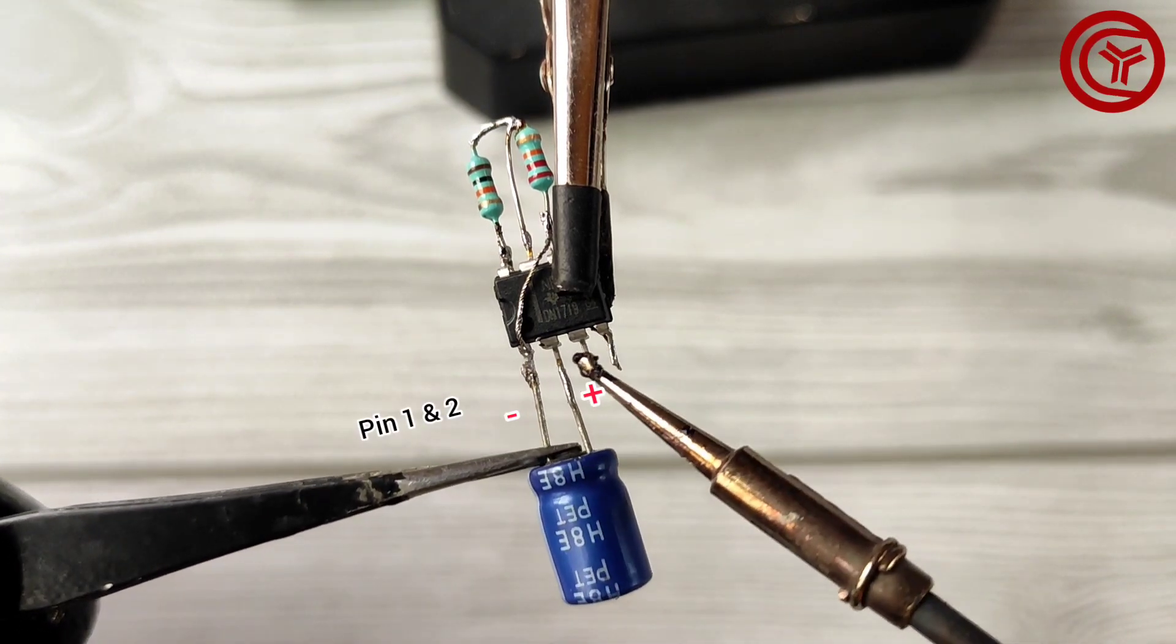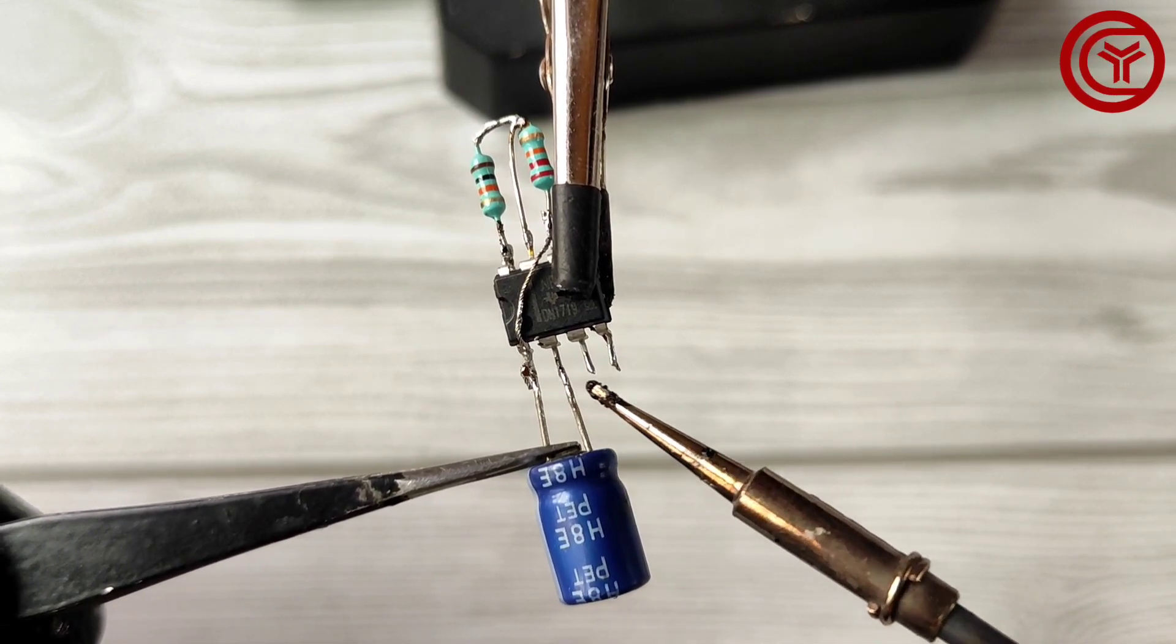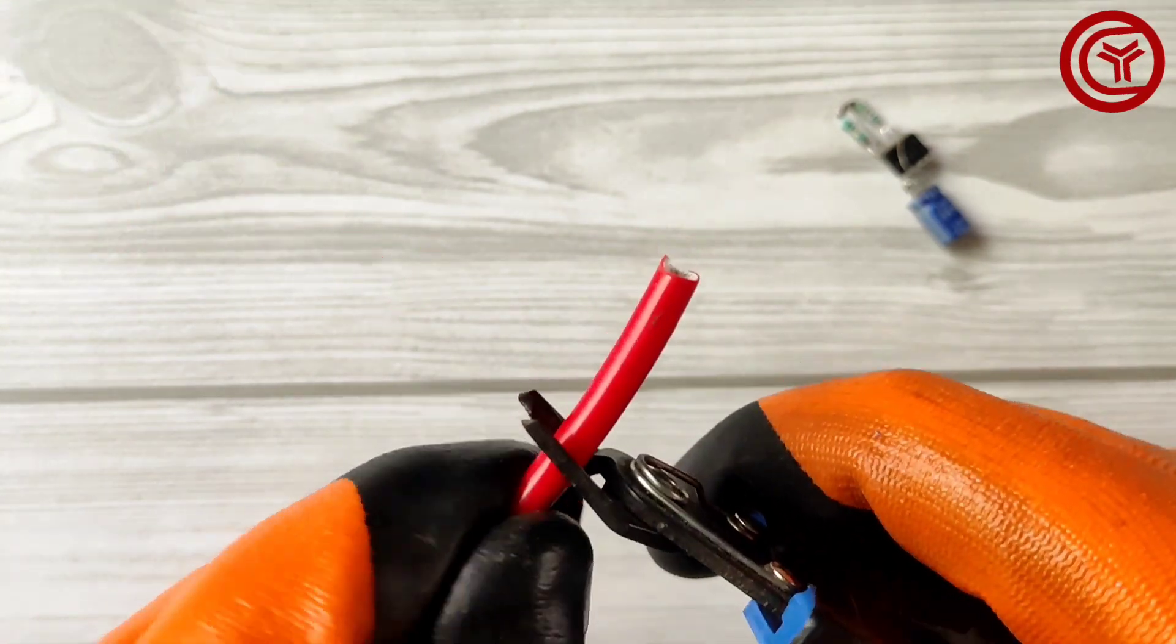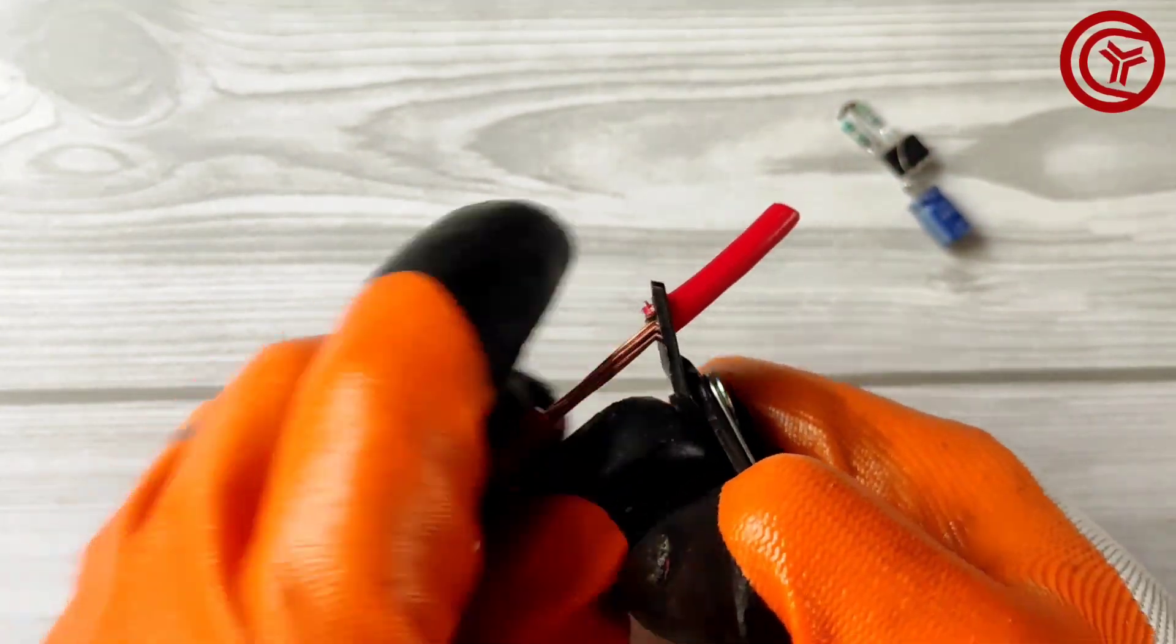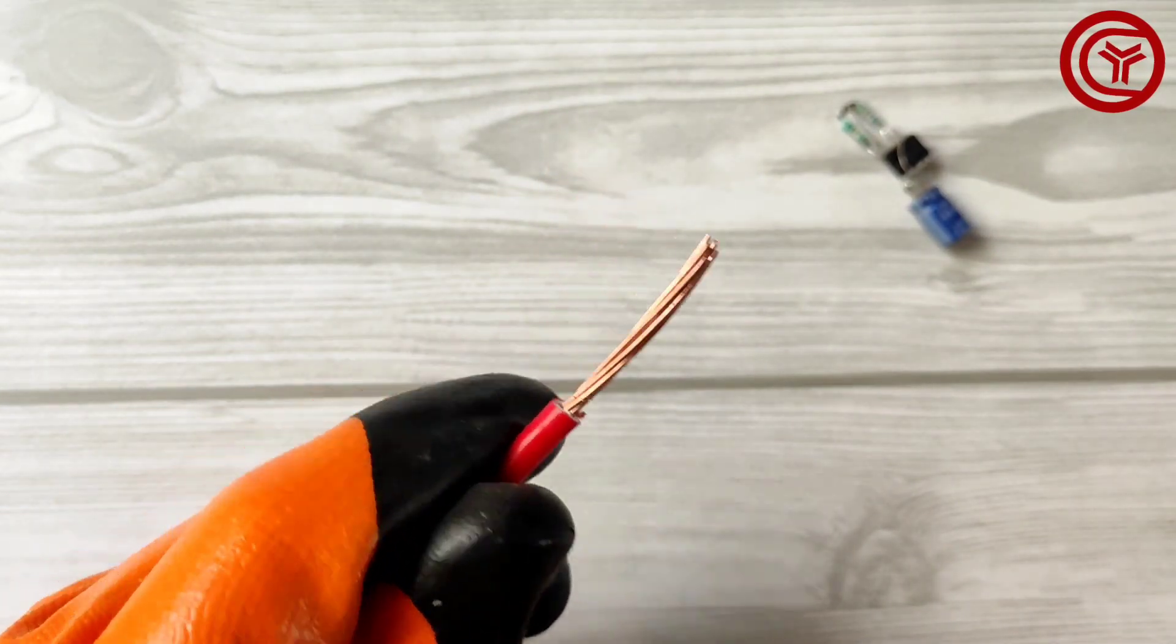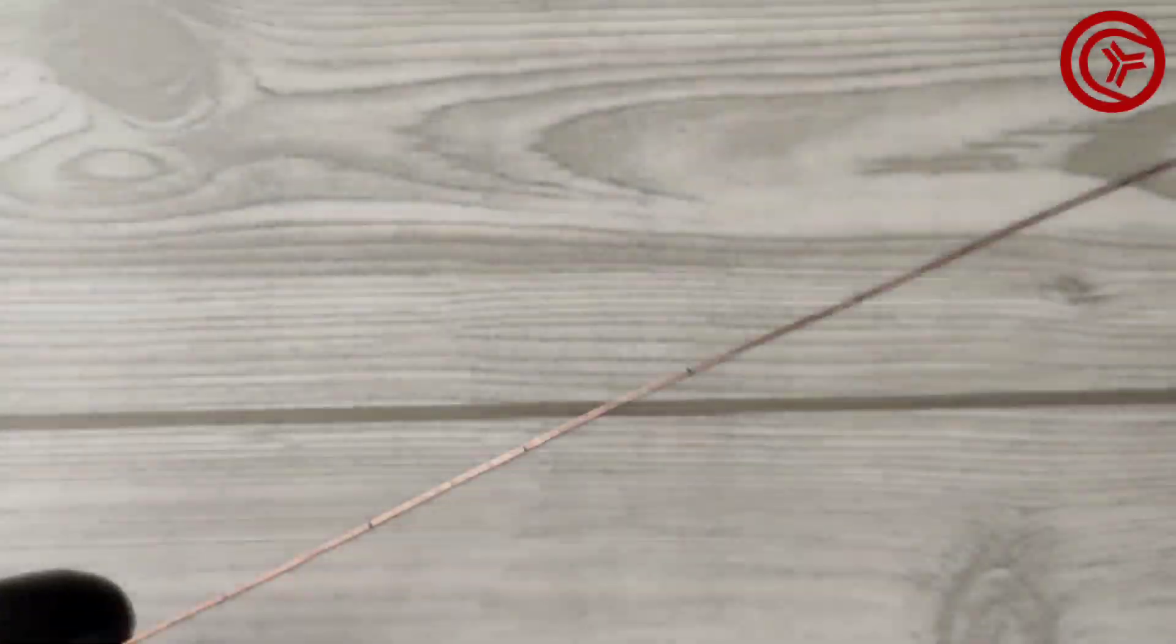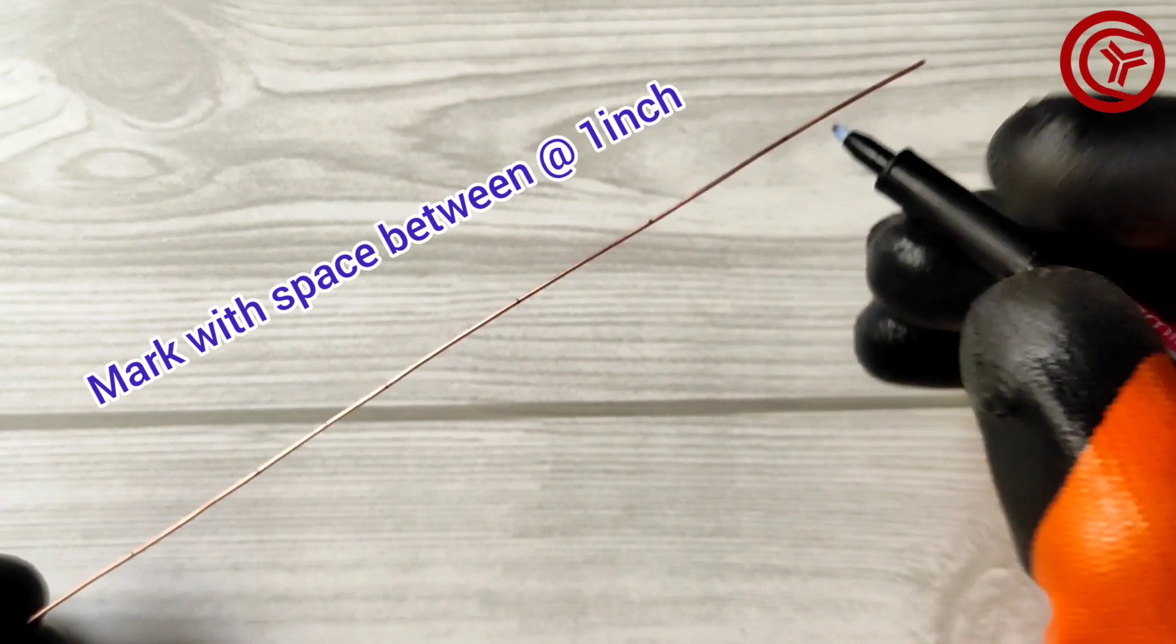Solder 100 UF capacitor positive on pin 2 and negative on pin 1. Now take a normal gauge copper wire and remove the insulation cover.